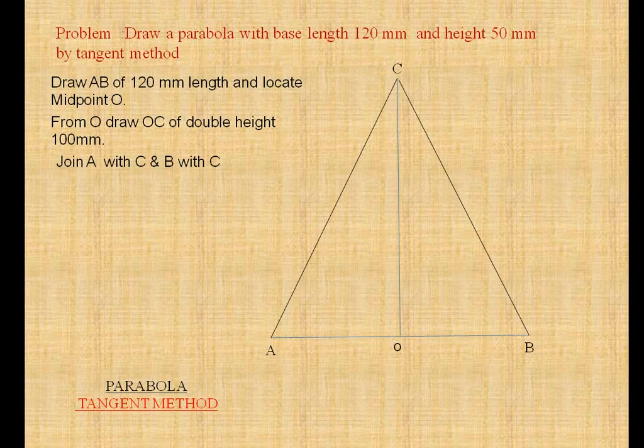Now we have to divide AC and BC into same number of equal parts. If we divide AC into 10 parts, BC also 10 parts. Here I am dividing into 15 equal parts.